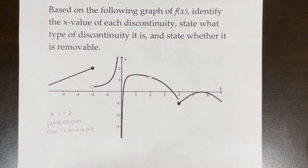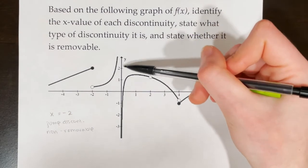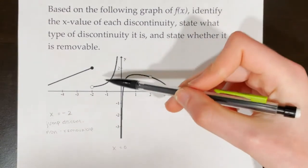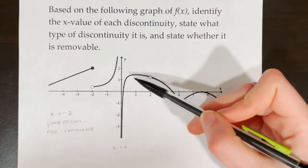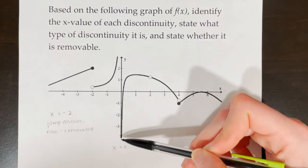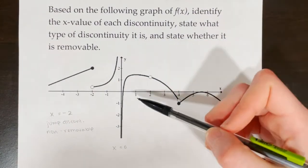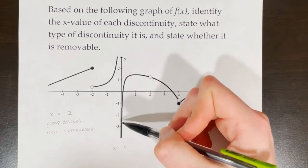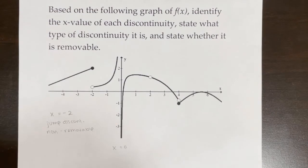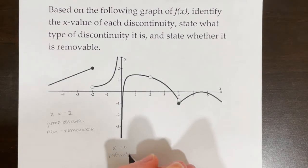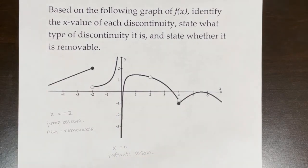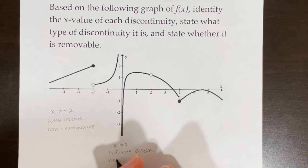The next discontinuity is at x equals 0. From the left side it's approaching infinity; from the right side it's approaching negative infinity. This means there's probably a rational function with a vertical asymptote at x equals 0, and it is an infinite discontinuity. Infinite discontinuities are non-removable.